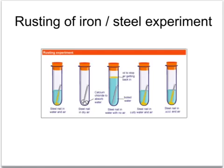The second tube shows the nail in contact with air only. Any water or water vapour in the tube has been removed by using a drying agent, in this case calcium chloride.